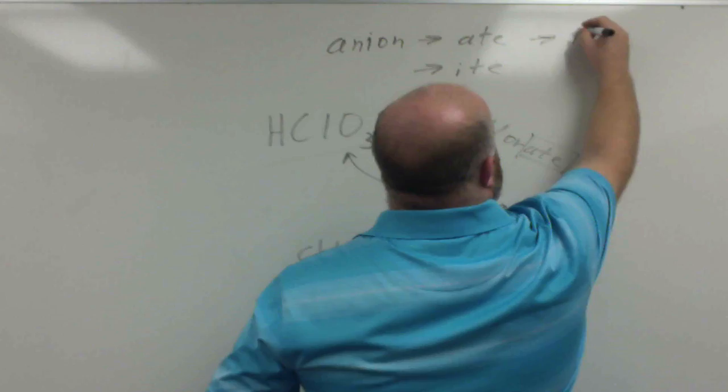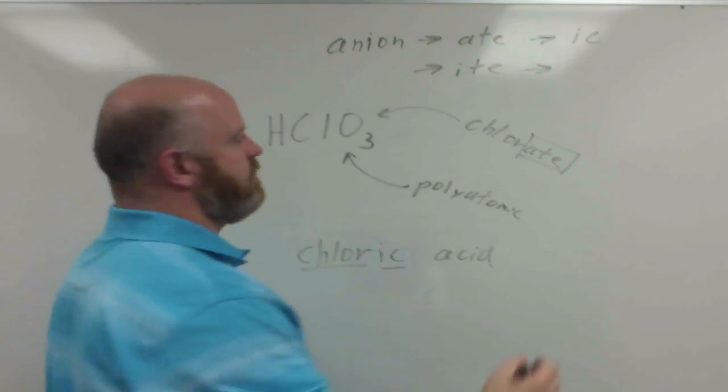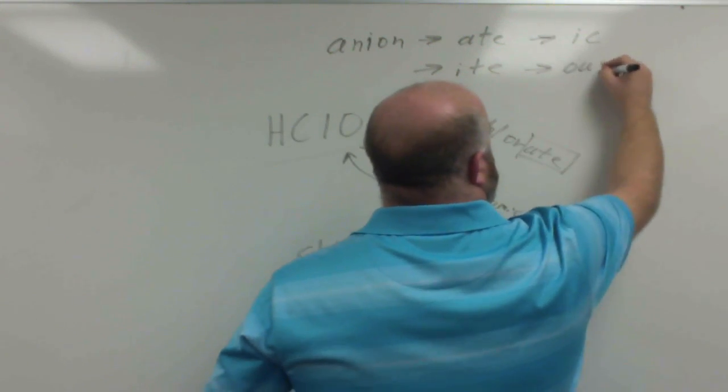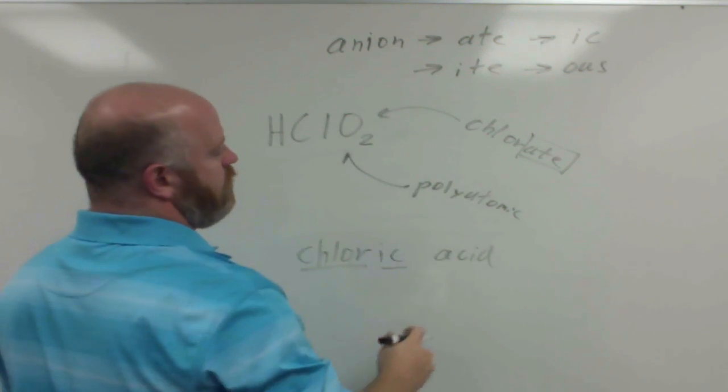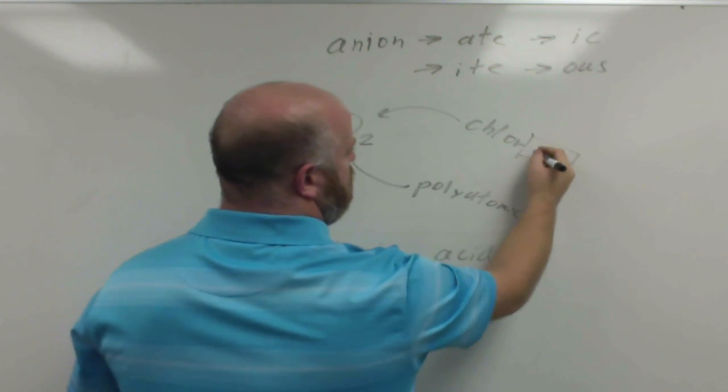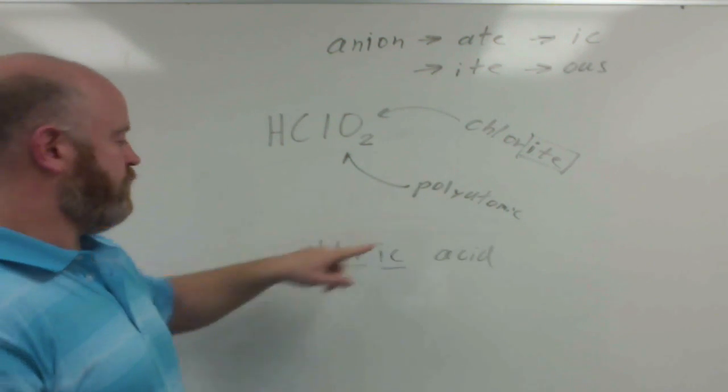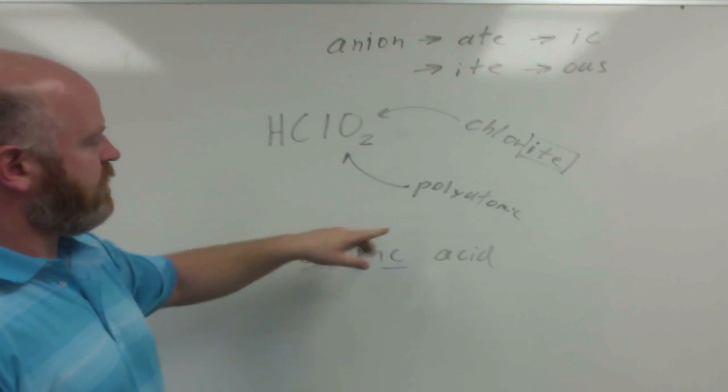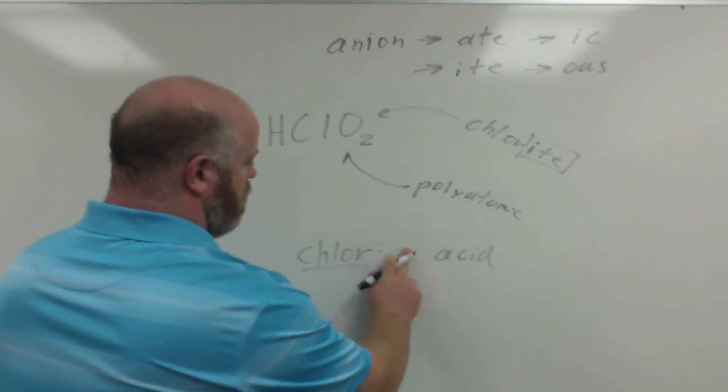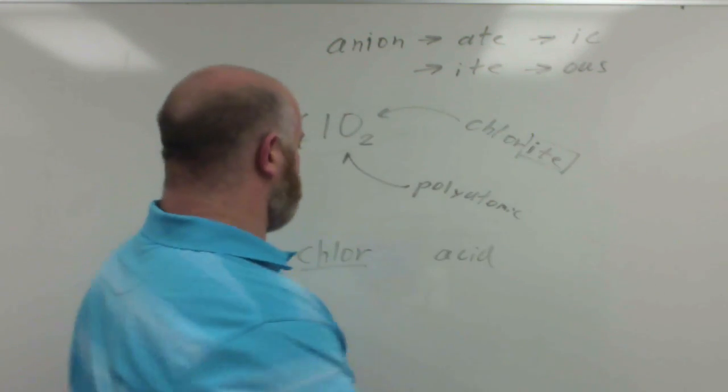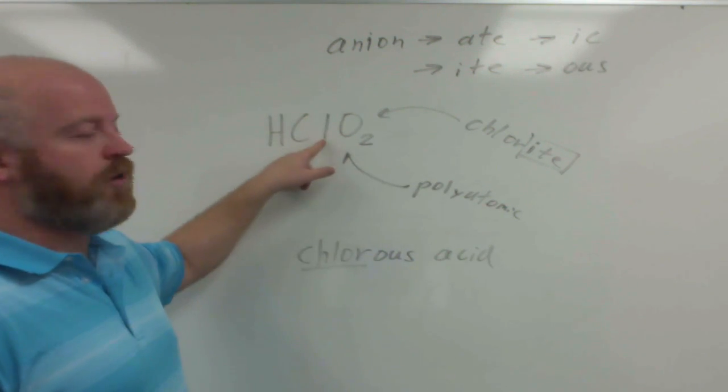So -ate, we end with -ic. -ite, same scenario, but we end in -ous instead. So if we had HClO2, which would be chlorite, still a polyatomic ion, so we don't use hydro. But now instead of calling this chloric acid, we can't call it the same thing, it's a different compound.